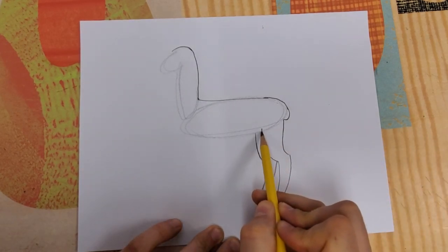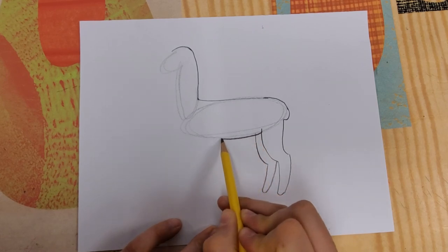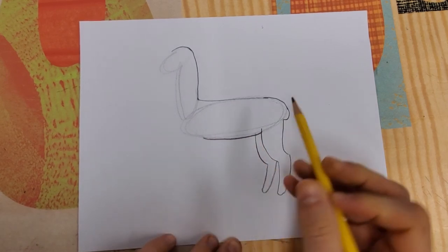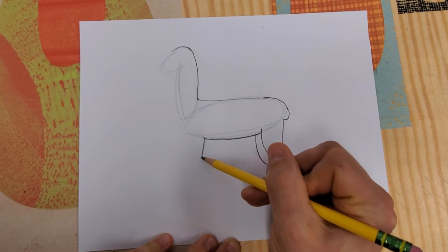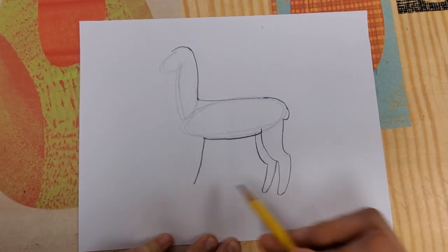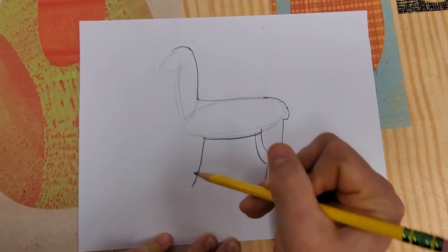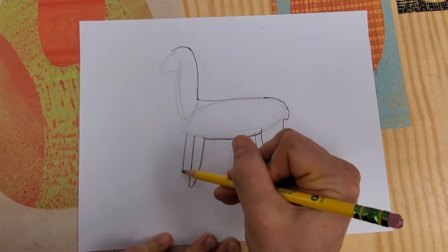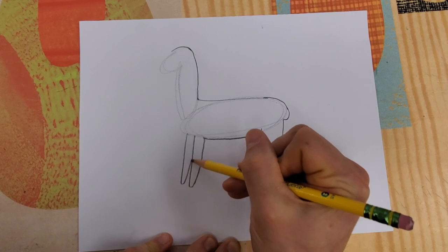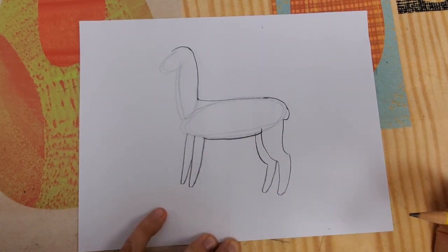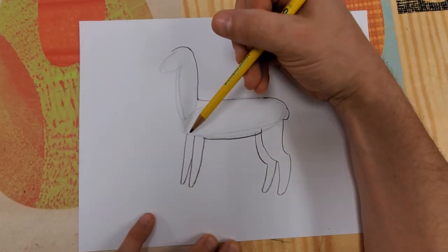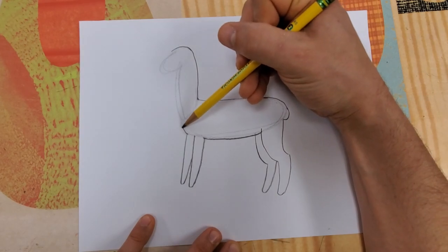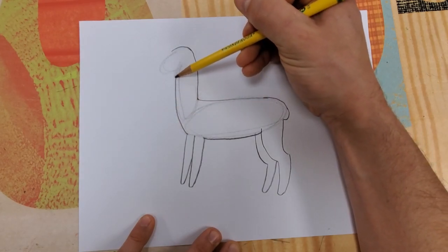I'm going to bring across the belly of this alpaca. When I get near the front here, I'm going to bring down, looking at where the back legs end, going to bring down two front legs.